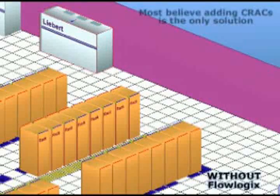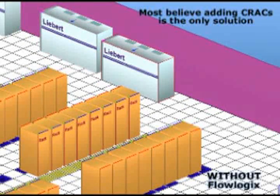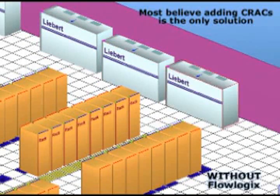CRAC units add minimal usable cooling capacity into a data center. In comparison, Flowlogix increases cooling capacity without adding any additional energy.